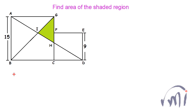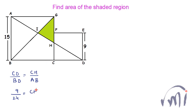From the similarity, the ratio of CD to BD equals the ratio of CH to AB. CD is 9, BD is 9 plus 15 which is 24, and AB is 15. Since 3 threes are 9 and 3 eights are 24, we can see that CH equals 15 multiplied by 3, which is 45 divided by 8.